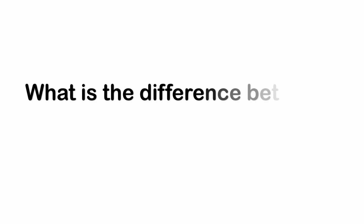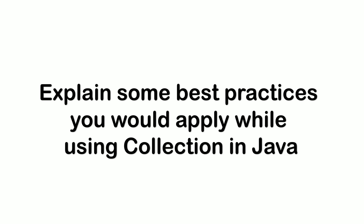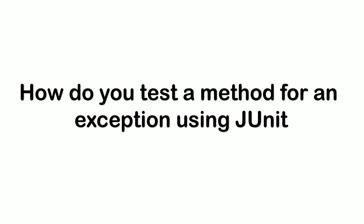The next question was on Comparator and Comparable — what are the differences, in which scenarios would I use which, and then he asked me to write code to sort an Employee object using both the Comparator and Comparable interfaces. He also asked me to explain some best practices I would apply while using collections in Java. Feel free to comment good practices in the comment section. Then: how do you test a method for an exception using JUnit? I explained how to test whether a method is throwing the exception in the right way.